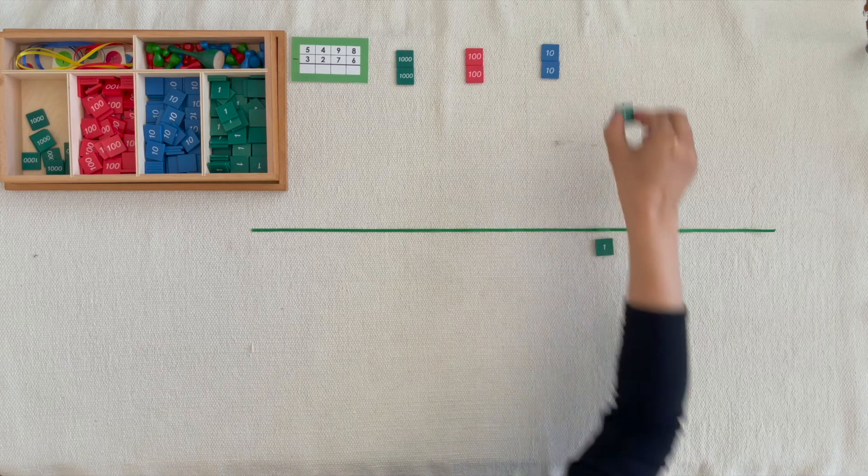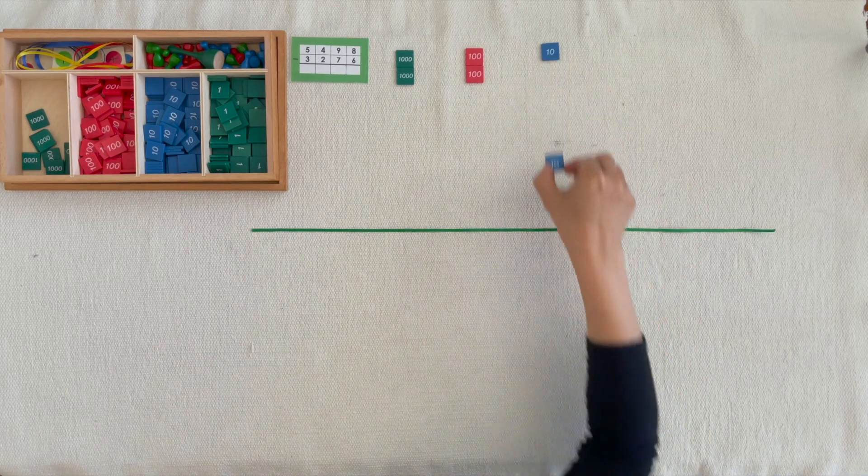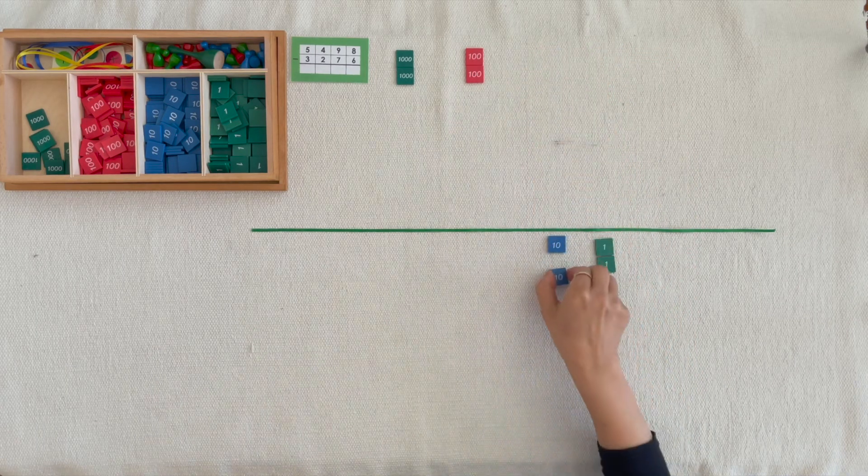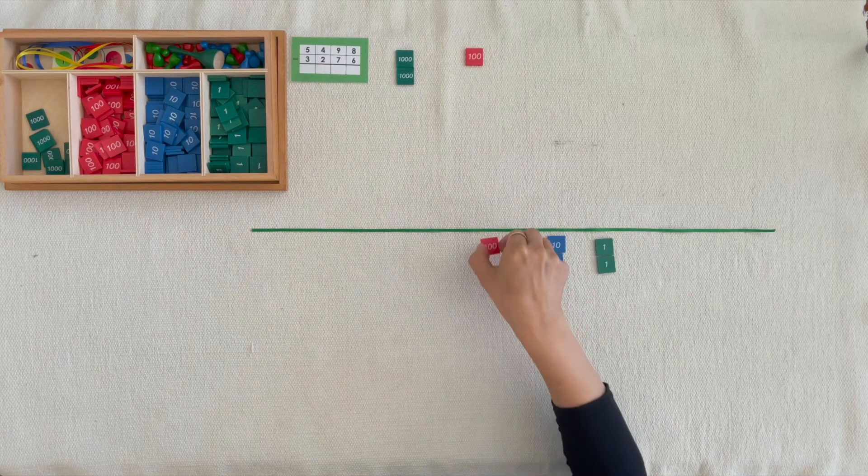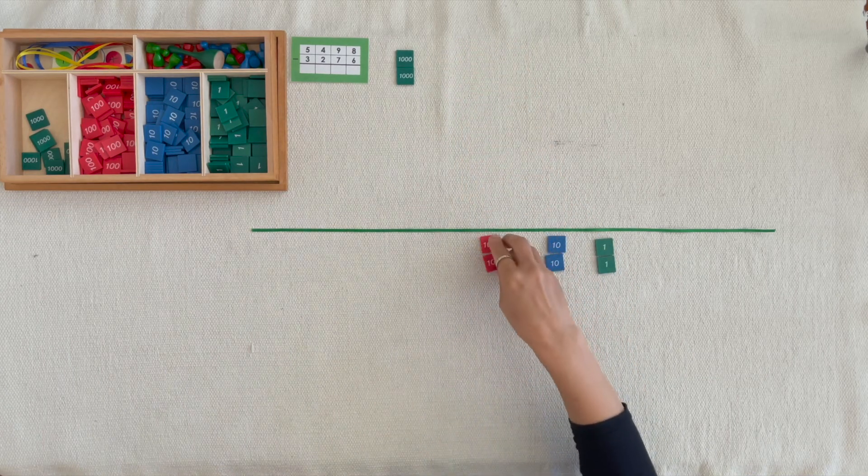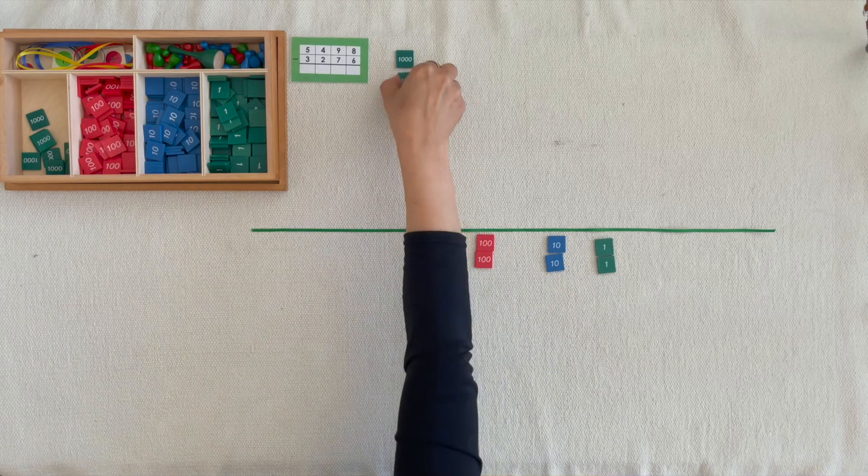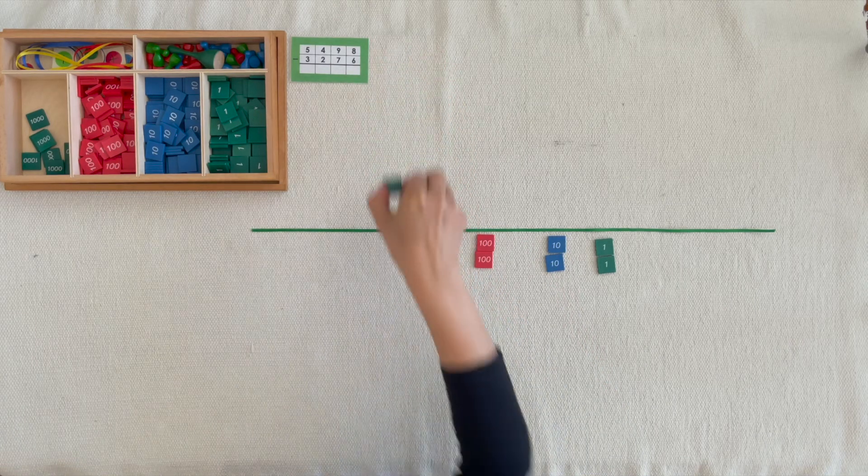1 unit, 2 units. 1 10, 2 tenths. 1 100, 2 hundredths. 1,000, 2 thousandths.